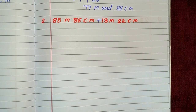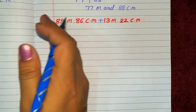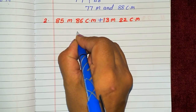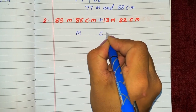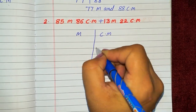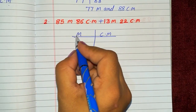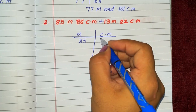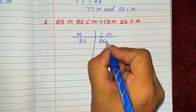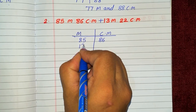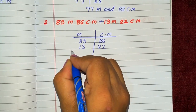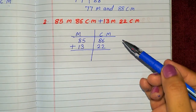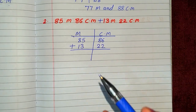13 meter plus 22 centimeter. First we arrange meter and centimeter. Then we write meter in the meter column and centimeter in the centimeter column: 13 meter and 22 centimeter. Put the plus sign, then add centimeter to centimeter and meter to meter.